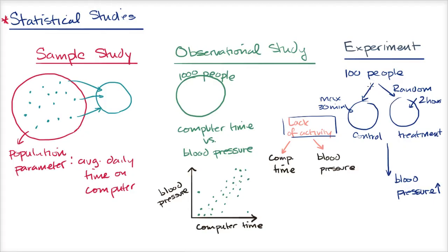Depending on whether this was a large enough experiment conducted well, this suggests there's a causality here — that by making these people spend more time in front of a computer, that actually raised their blood pressure.